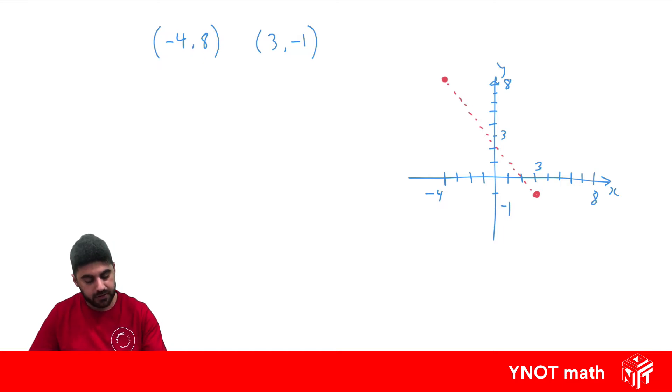So to find the gradient, we can use the formula m equals y2 minus y1 over x2 minus x1. So let's go ahead and label our points. So we might go, this one is the second one, so x2, y2. This one is our first one, so x1, y1. Let's go ahead and sub those in.